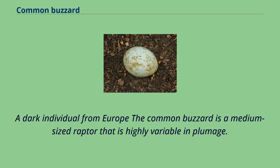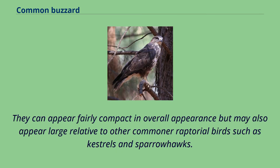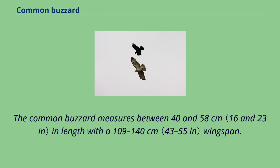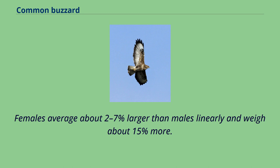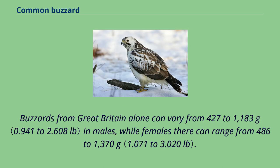The common buzzard is a medium-sized raptor that is highly variable in plumage. Most buzzards are distinctly round-headed with a somewhat slender bill, relatively long wings that either reach or fall slightly short of the tail tip when perched, a fairly short tail, and somewhat short and mainly bare tarsi. The common buzzard measures between 40 and 58 centimeters in length with a 109 to 140 centimeter wingspan. Females average about 2 to 7 percent larger than males linearly and weigh about 15 percent more. Buzzards from Great Britain alone can vary from 427 to 1,183 grams in males, while females can range from 486 to 1,370 grams.